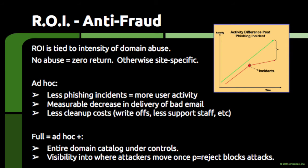From a purely anti-fraud perspective, DMARC's ROI is tied to the intensity of abuse that a domain is suffering. If there is no abuse against a domain, then justifying the cost of deploying DMARC becomes difficult. If a domain is under severe attack, then an organization might be able to justify a project to bring a domain into compliance with DMARC. In this context, the complexity of an organization's email infrastructure is a major factor in the cost of deployment.